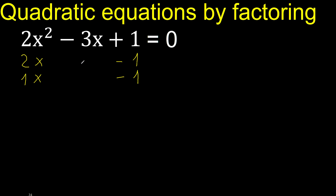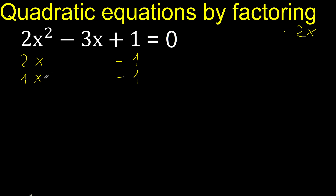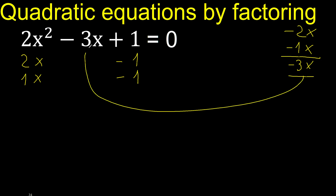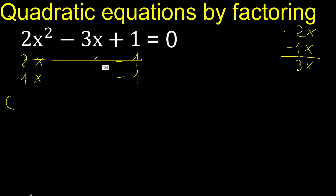Let's analyze if it is correct. 2x multiplied by minus 1, minus 2 multiplied by 1 is 2x. Here, 1 multiplied by 1 is 1, minus 1, x minus 2, minus 1 is minus 3x. Therefore it is correct, therefore like this.